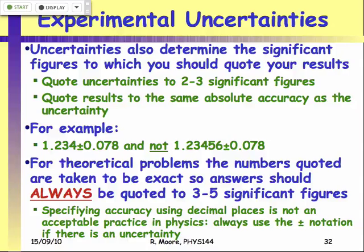For theory questions in lectures, just quote your answers to three to five significant figures. There are one or two cases in relativity where you may be asked for more — and it will explicitly say so in the question, such as 'quote your answer to six or seven significant figures.' That's very rare; I can only think of one or two examples in this course. Every other time, three to five significant figures is fine. Don't worry about the number of significant figures given in a question — there is no hidden uncertainty in the number of digits I give you.